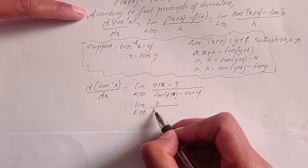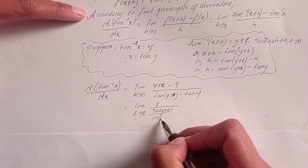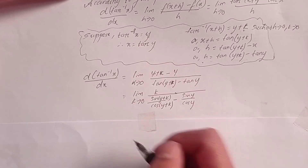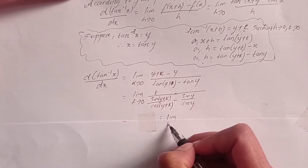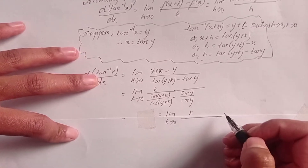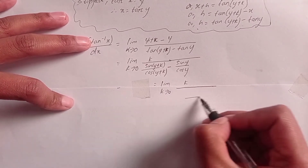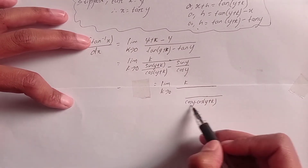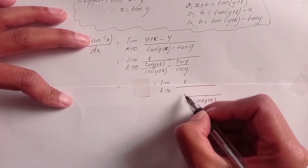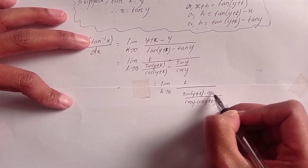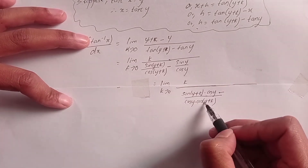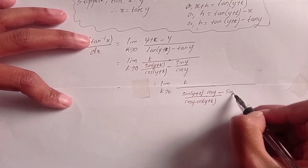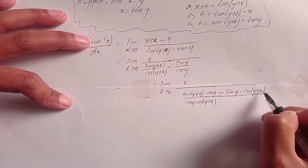Now tan(y+k) equals sin(y+k) divided by cos(y+k), and tan y equals sin y divided by cos y. Taking the LCM, the numerator becomes sin(y+k) dot cos y minus sin y dot cos(y+k), all over cos y dot cos(y+k).